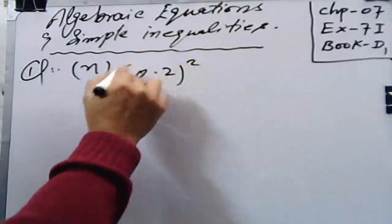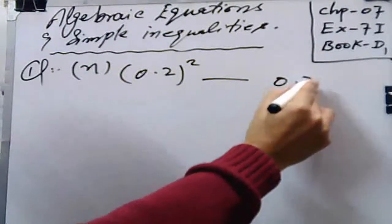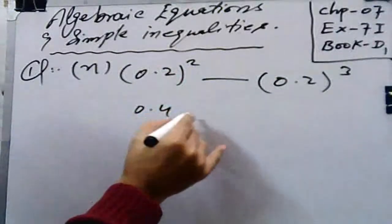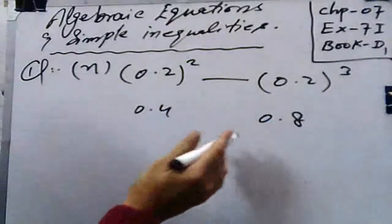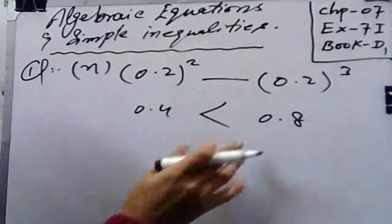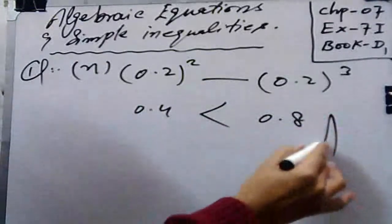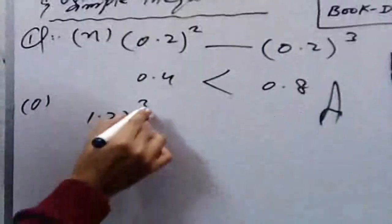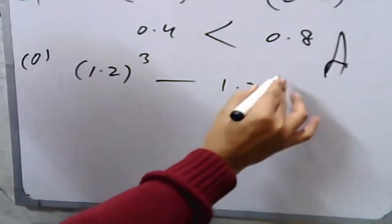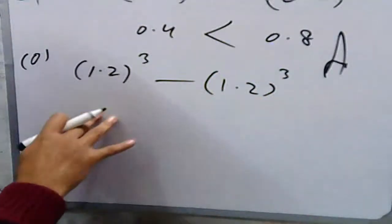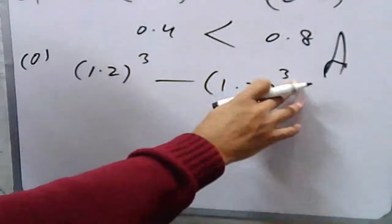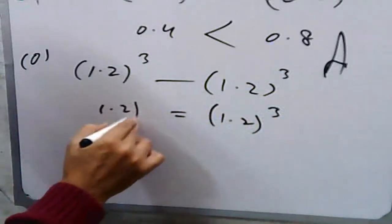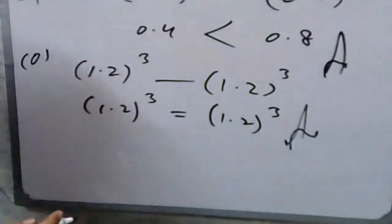In part n: (0.2)² dash (0.2)³. You get 0.04 and 0.008 respectively, so 0.04 is greater — write the greater than sign. In part o: 1.2³ dash 1.2³. Both expressions are identical, so put the equality sign — no need to simplify.